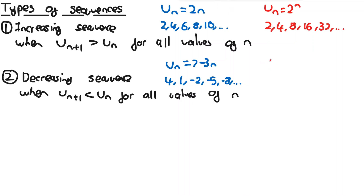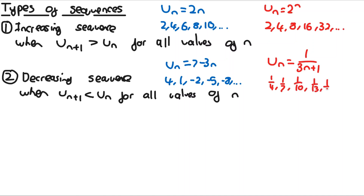An example specifically mentioned on the spec is u_n = 1/(3n+1). Substituting values of n gives 1/4, 1/7, 1/10, 1/13, 1/16, etc. This is a decreasing sequence because the terms are getting smaller and smaller.